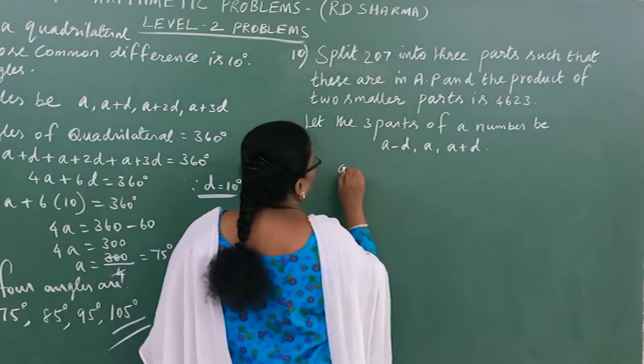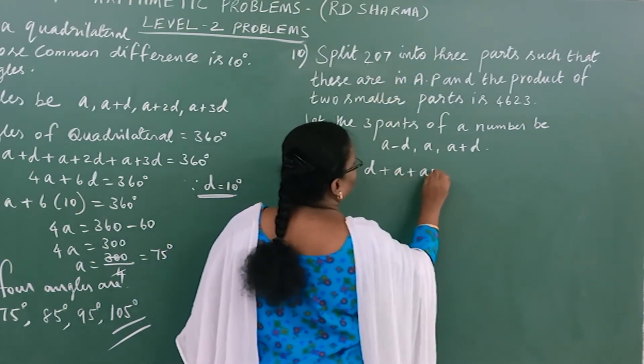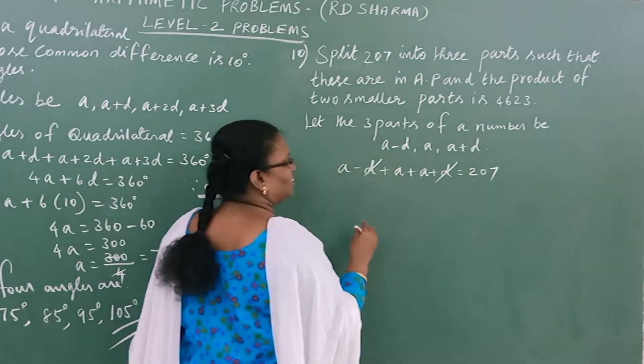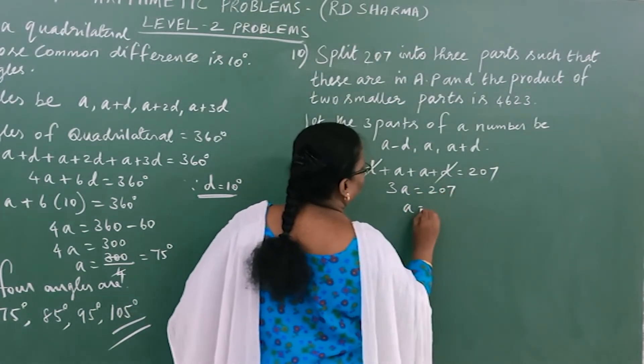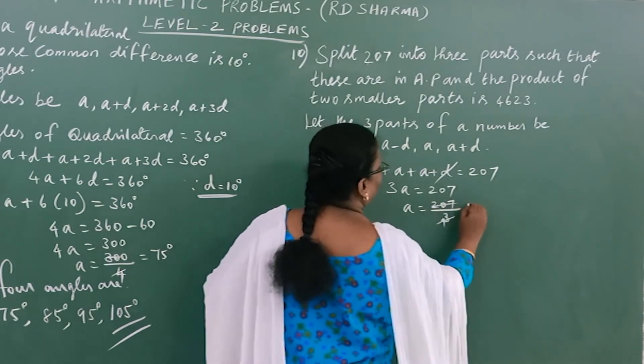Whose sum is 207: A-D + A + A+D = 207. The D terms cancel, so 3A = 207. Therefore A = 207÷3 = 69.